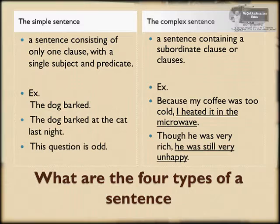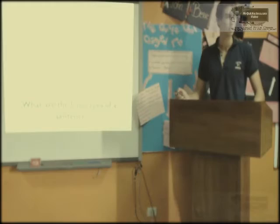The simple sentence: a sentence consisting of only one clause with a single subject and predicate. Example: 'The dog barked.' 'The dog barked at the cat last night.' This question is odd — here it's odd.